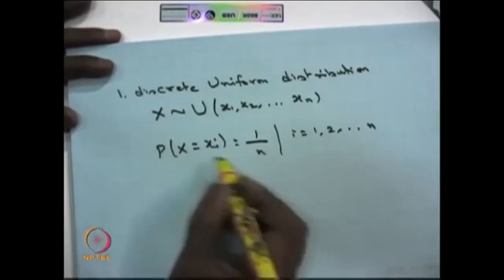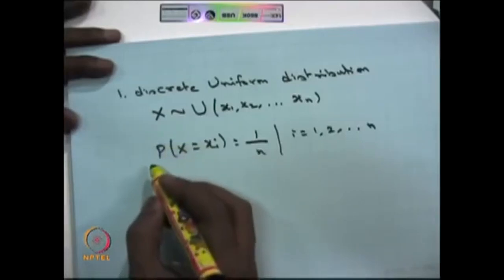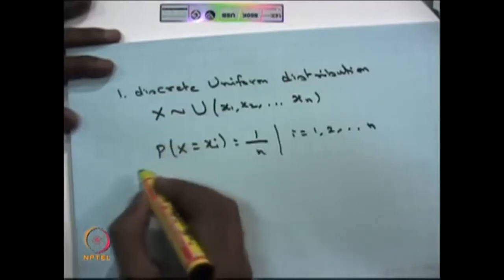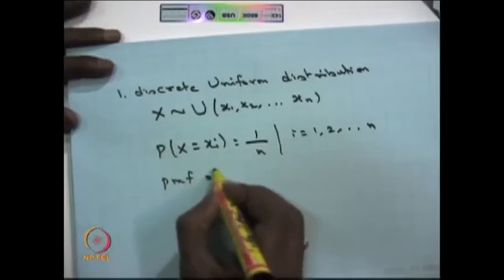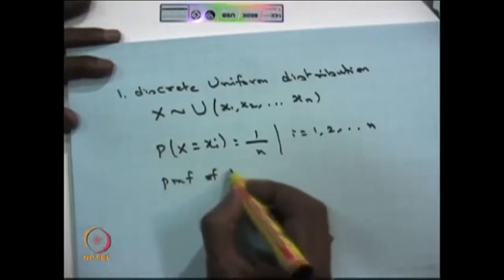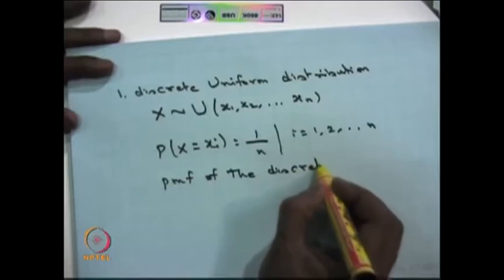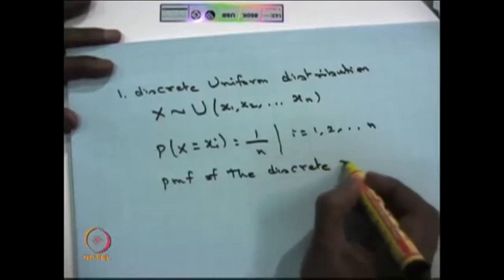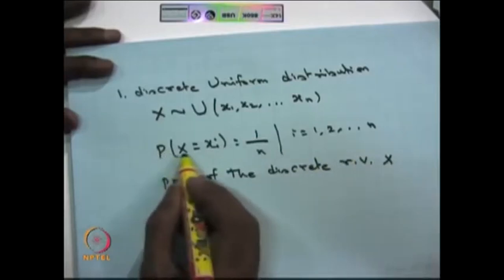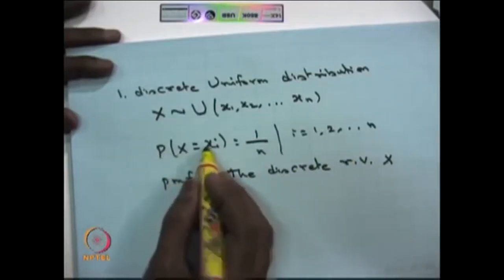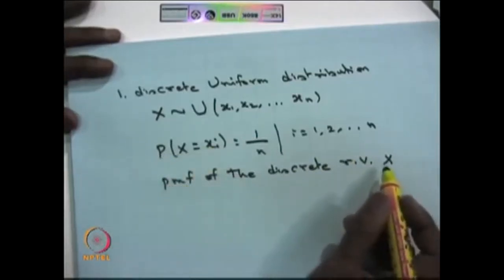It satisfies the property that the summation of all Xi's is going to be 1, and the probability of X equal to Xi is greater than or equal to 0. That means for the Xi's it is greater than 0 and at all other points it is 0. Therefore, it satisfies the probability mass function of the discrete random variable, and P(X = Xi) is the probability mass function evaluated at Xi.